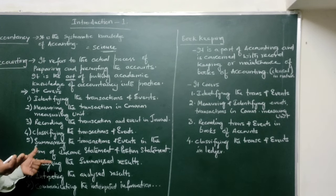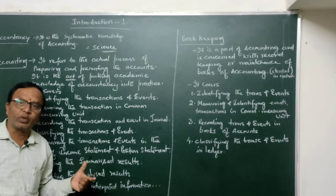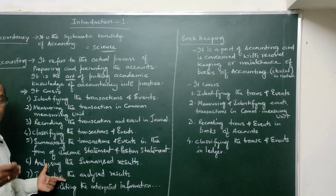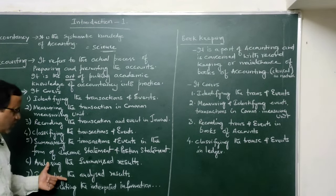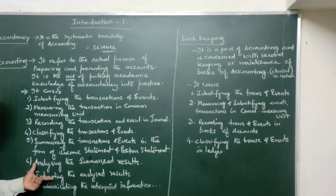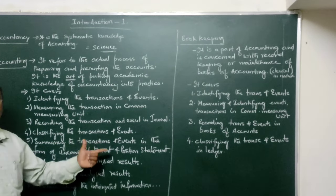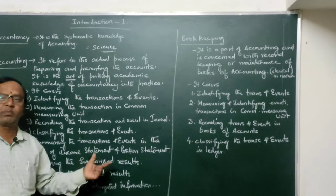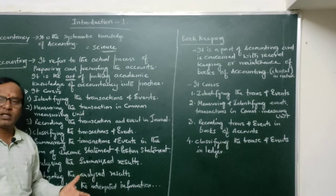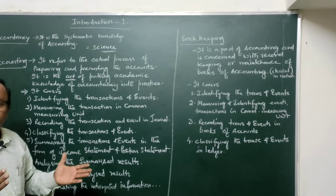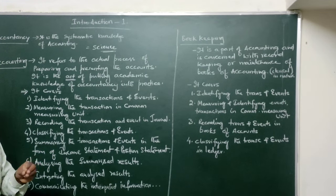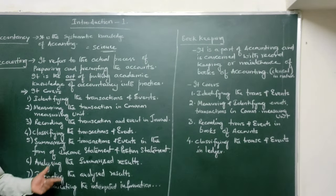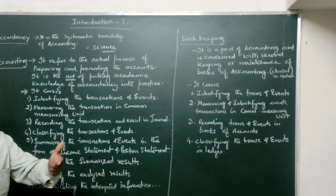After analyzing, the next step is interpreting — commenting upon the analyzed facts. The accountant, by applying his academic knowledge and skill, analyzes how things are, what has gone wrong, and interprets accordingly. As an expert with experience, he is able to analyze and comment on those particular matters. Then comes communicating the interpreted information to people who need it — the various interested parties such as owners, management, creditors, debtors, investors, and the government.